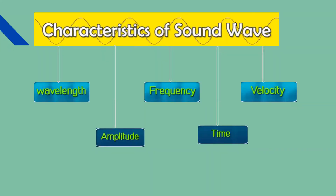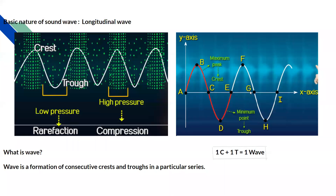Let us start with the topic of characteristics of sound waves. There are five characteristics of sound waves: wavelength, amplitude, frequency, time, and velocity. Let us study these characteristics one by one.